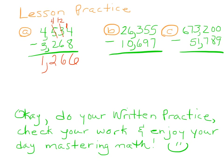We have 5 and want to take away 7 — we can't, so we borrow. This is now a 4, and now we have 15 ones. 15 minus 7 is 8. We have 4 and want to take away 9 — we can't — this becomes a 2, and that becomes 14 tens. 14 tens minus 9 tens is 5 tens. We have 2 and want to take away 6 — can't do that either — so we borrow and regroup. This becomes a 5, that becomes 12 hundreds. 1,200 minus 600 is 6 hundreds. 5 minus 0 is 5, and 2 minus 1 is 1.